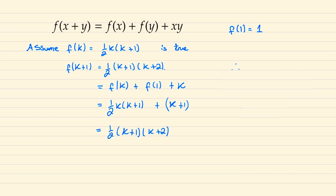Therefore, considering f of 2001, this would be one half of 2001 times 2002, which gives us a total value of two million, three thousand and one. And so we're done.